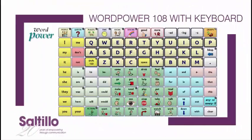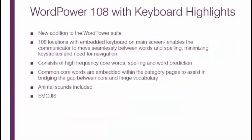WordPower 108 with Keyboard is a new addition to the suite of WordPower files. It features 108 locations with a keyboard built into the main screen, consisting of high-frequency core words, spelling, and word prediction. With the keyboard on the main page, the communicator moves seamlessly between words and spelling, minimizing keystrokes and the need for navigation.